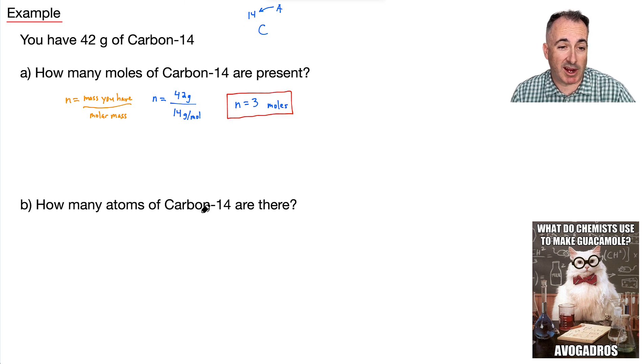Okay, so in part B, we want to know how many atoms of carbon-14 are there. Like how many actual atoms are there. Well, then we can use the equation that n equals capital N over NA. Well, remember, little n, that's the number of moles. Well, we just found that. NA is Avogadro's number, and capital N is the number that we're actually looking for.